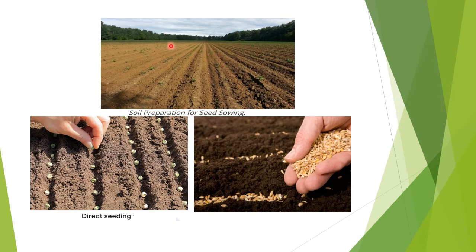To prepare the soil for seed sowing, you have to plow it, make small aggregates, add manure, and ultimately make different furrows or ridges. After preparing the soil, you can put seeds in these lines or furrows, directly one by one or in a continuous flow, either by manual means or mechanically.